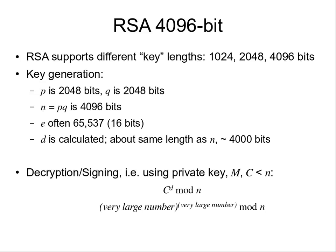As an example using the more secure 4,096-bit key: to generate keys, you choose two primes, 2,048 bits each in length, multiply them together to get a 4,096-bit value for N. E is usually fixed — everyone uses the same E value, which in decimal is 65,537, just 16 bits — a very small E. D is calculated based on E and the other values and is usually about the same length as N, so approximately 4,096 bits. We'll care about the lengths when we look at the attacks.